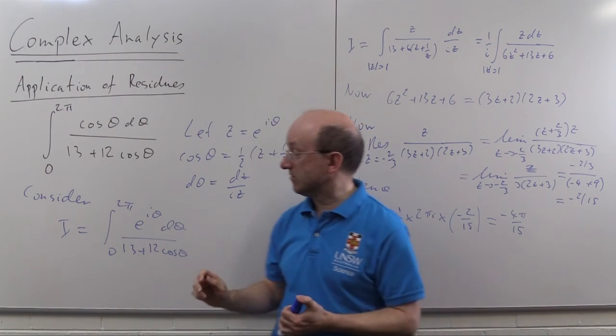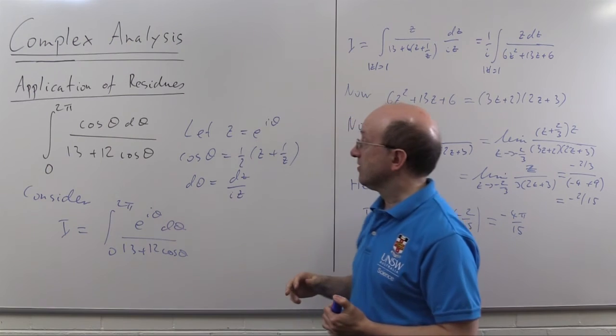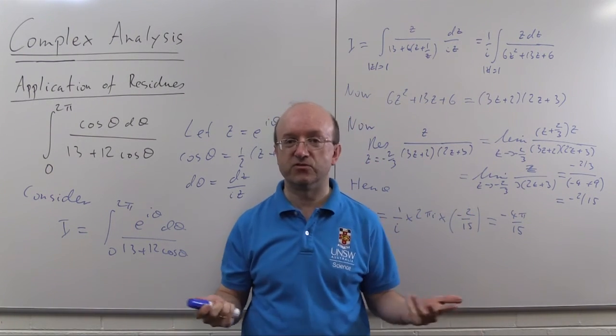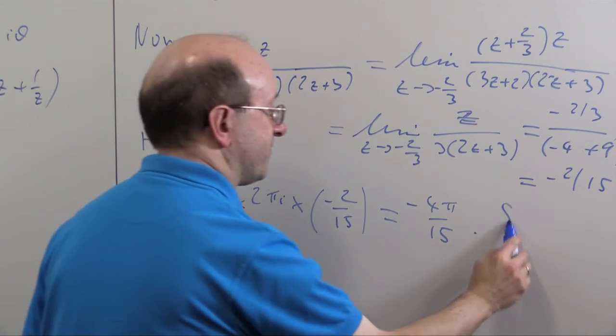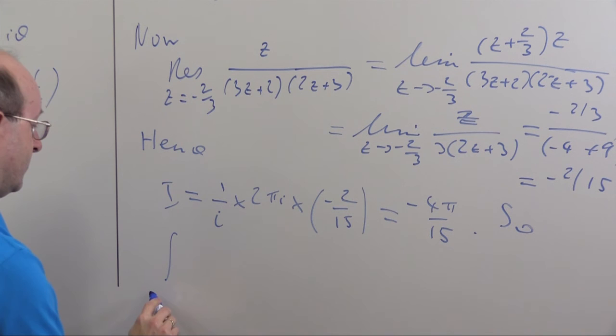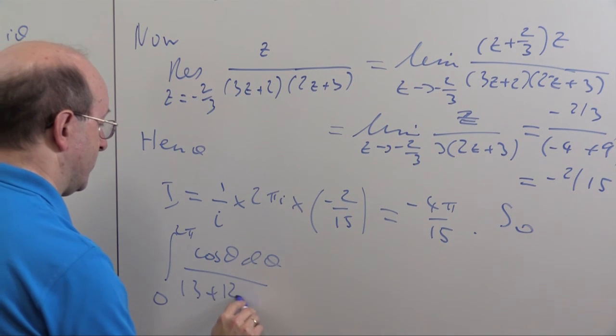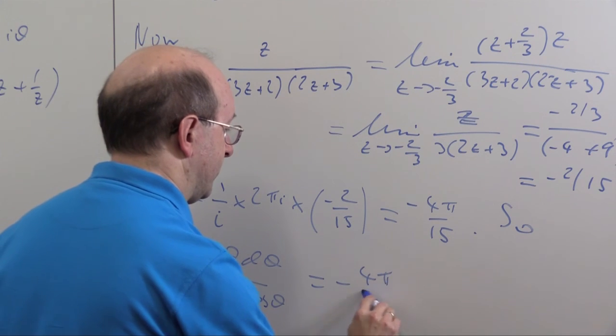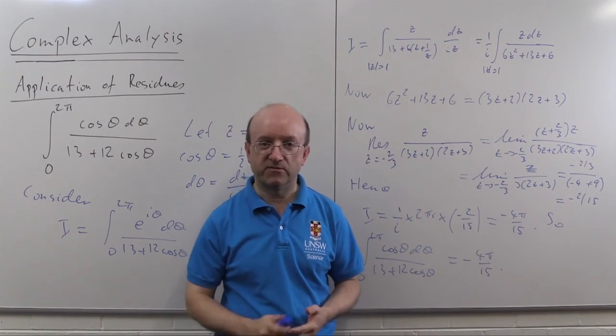So that's my integral i here involving both the real and the imaginary parts, so it follows if I take the real part well in fact it is just real, so the integral I was after, 0 to 2 pi, cos theta d theta over 13 plus 12 cos theta is minus 4 pi over 15, without any integration whatsoever.